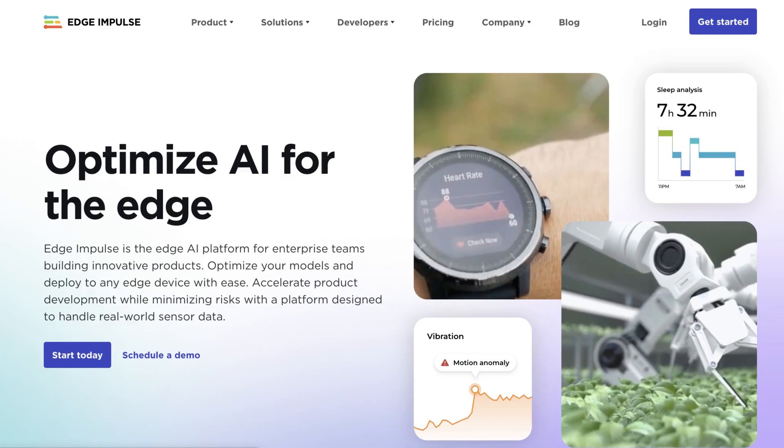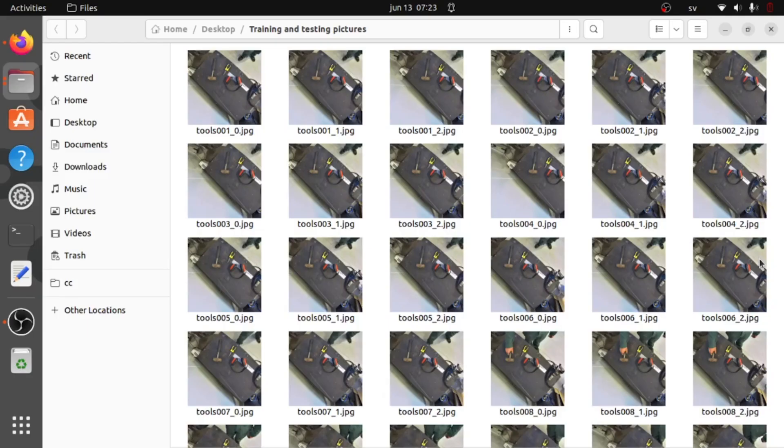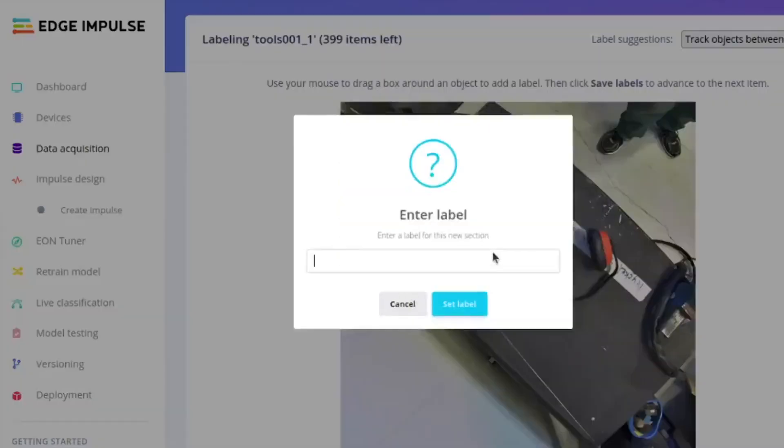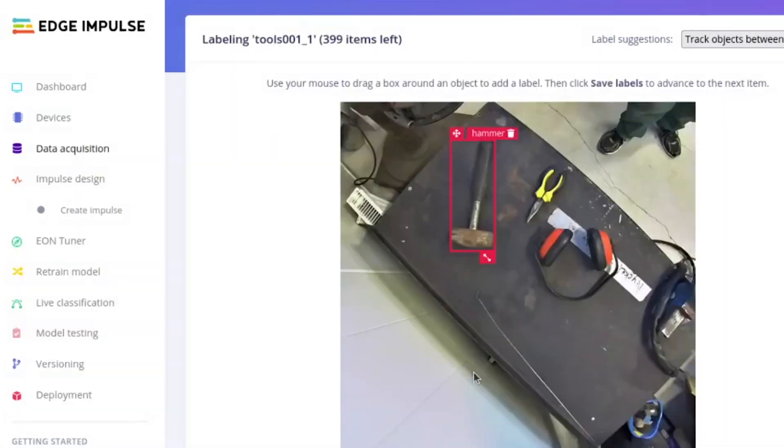We have used Edge Impulse to develop all three of the models we will be showcasing in this video. The best part about Edge Impulse is that you don't need any prior knowledge about coding or any previous expertise in machine learning. All you need to do is gather your data, gather your images, upload them to the site, and then label the objects that you actually want to detect, press enter in the training model, and then boom, you have a running model that you can use along with our application that will do live detection of different objects.